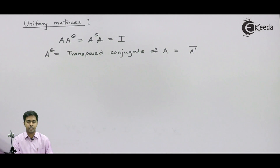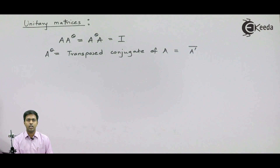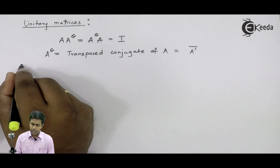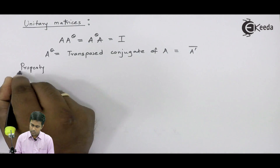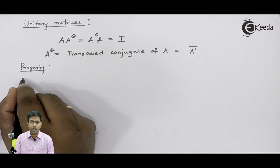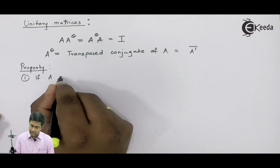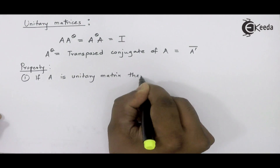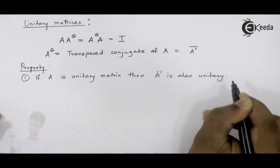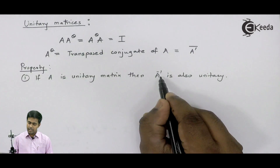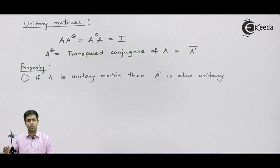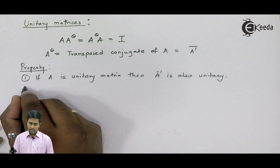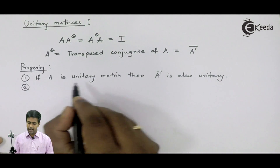Now let's see some properties of unitary matrices, which will be useful for solving related problems. Property one: if A is a unitary matrix, then its inverse is also a unitary matrix. Property two: if A is a unitary matrix, then A-dash, that is the transpose of A, is also unitary.